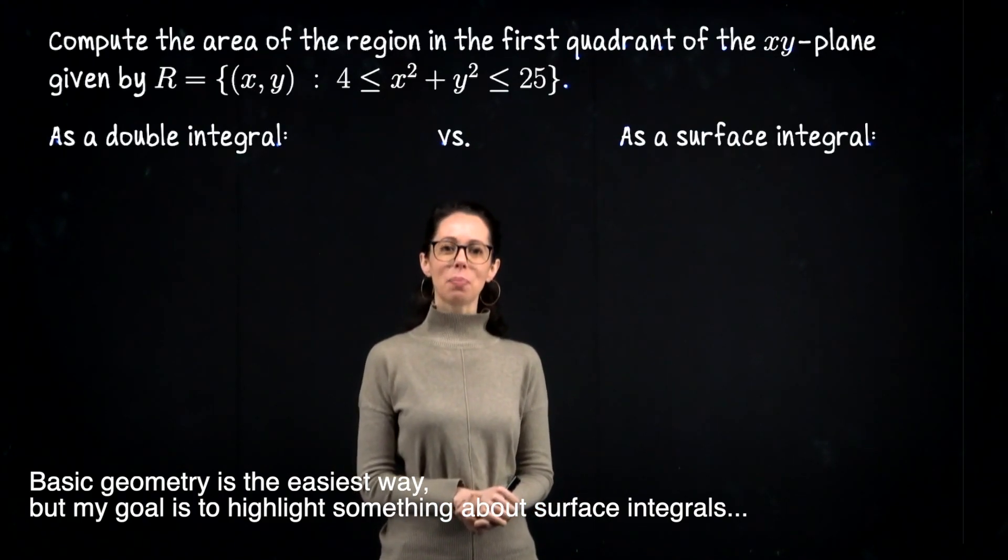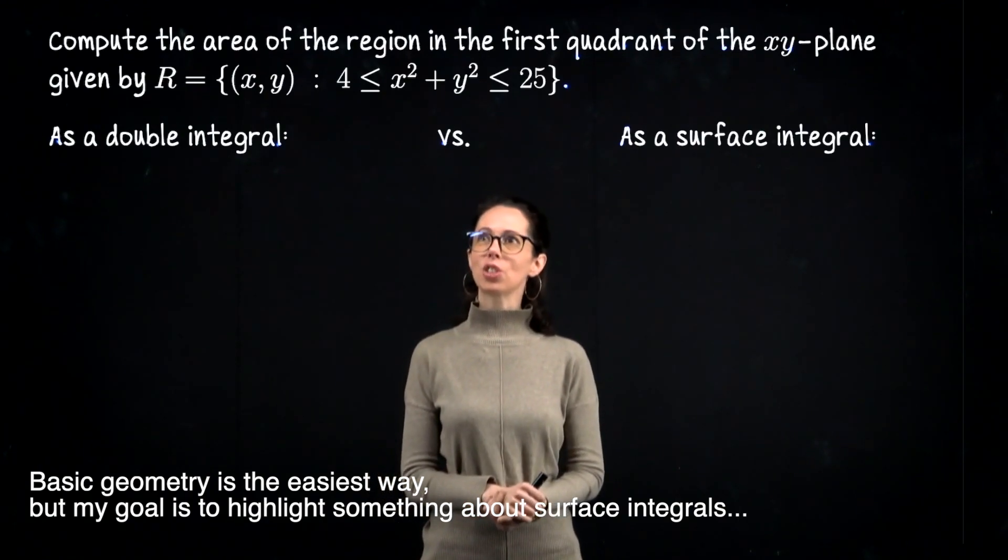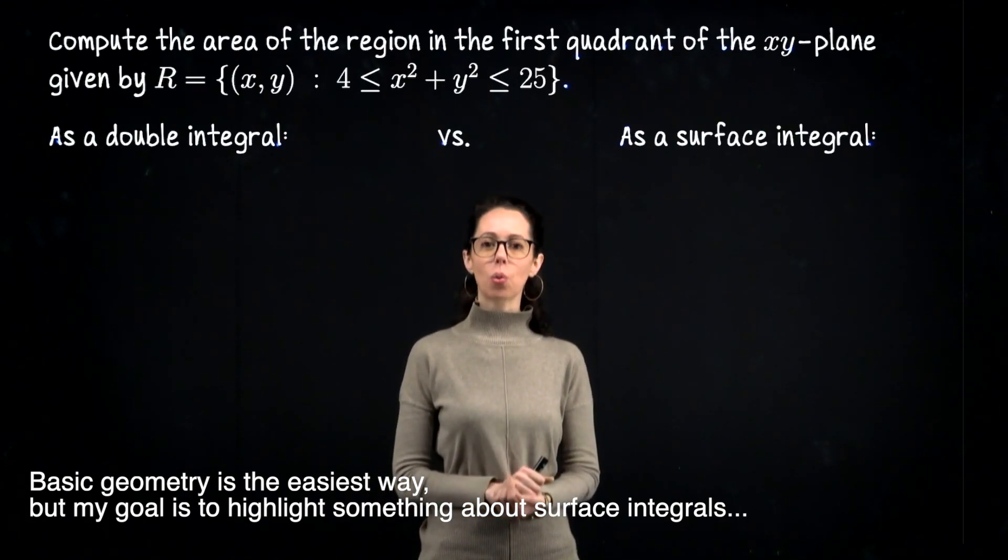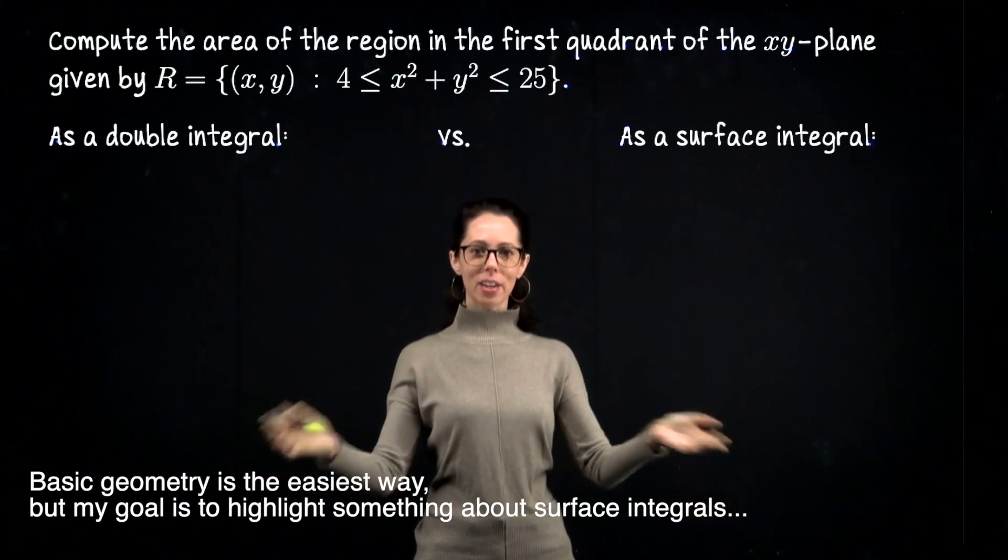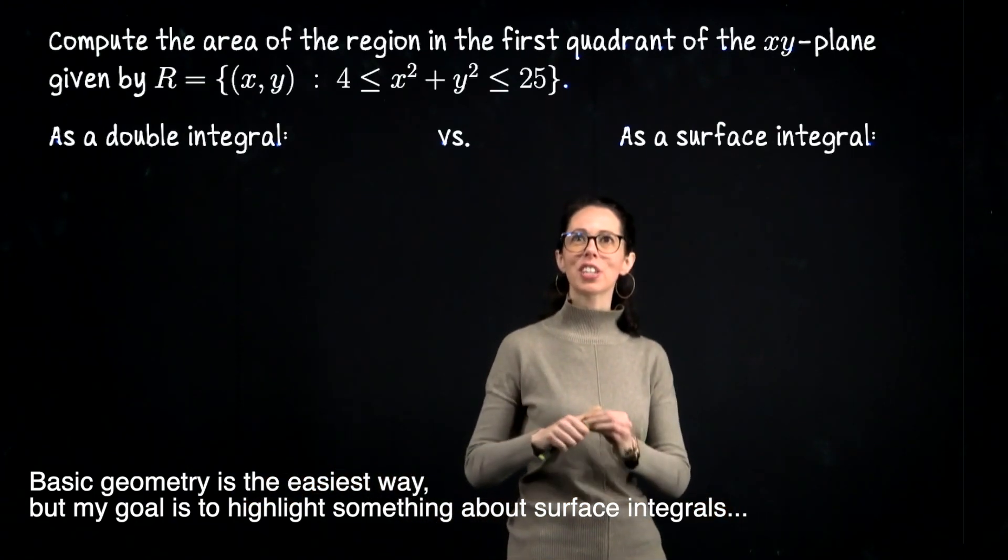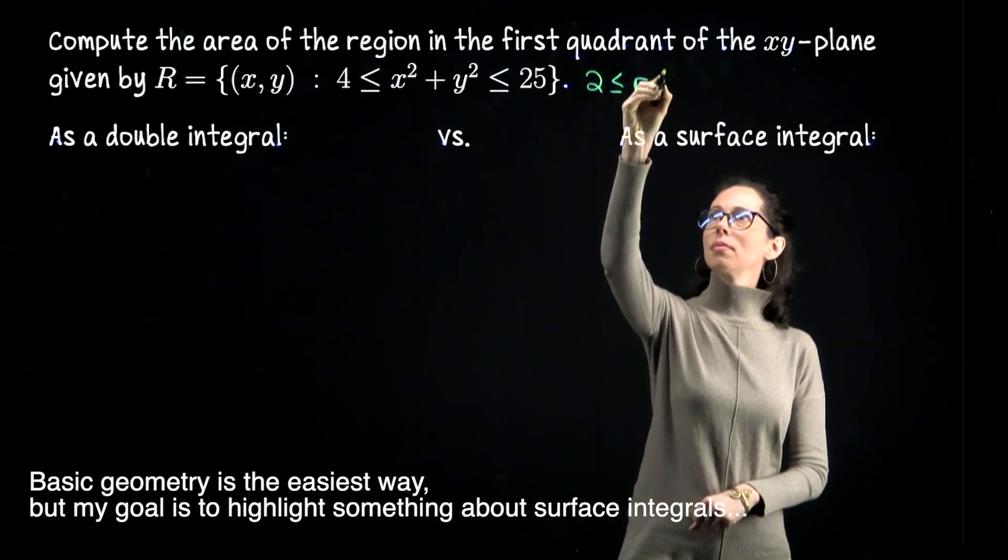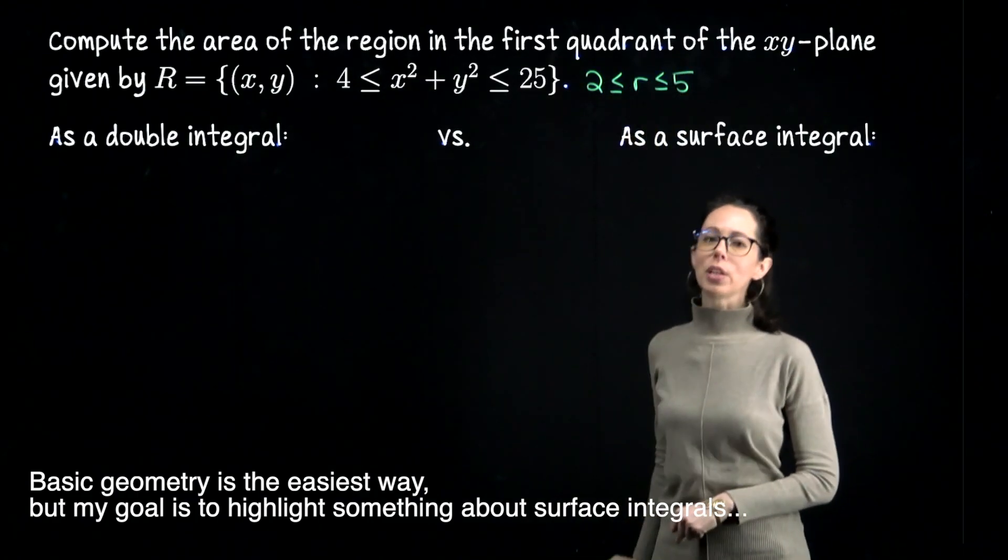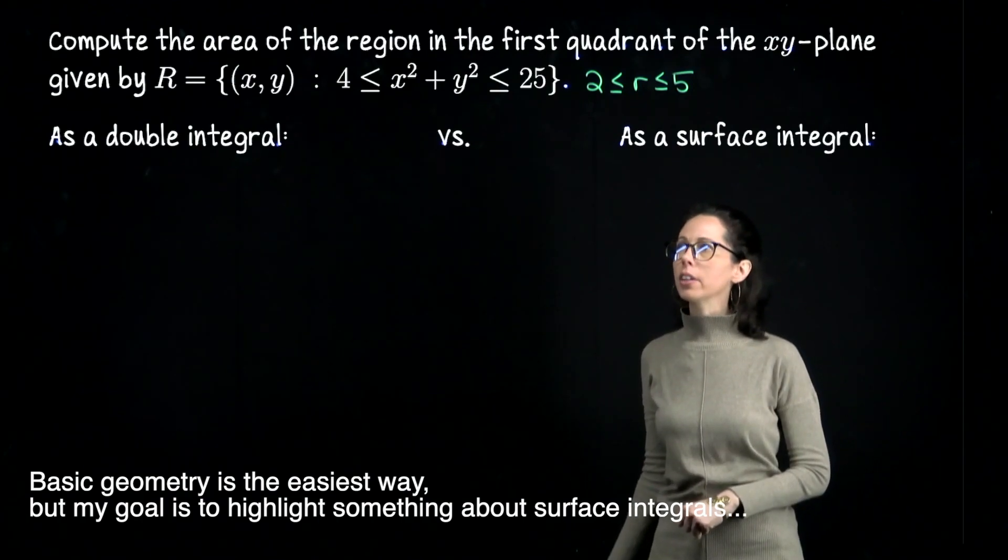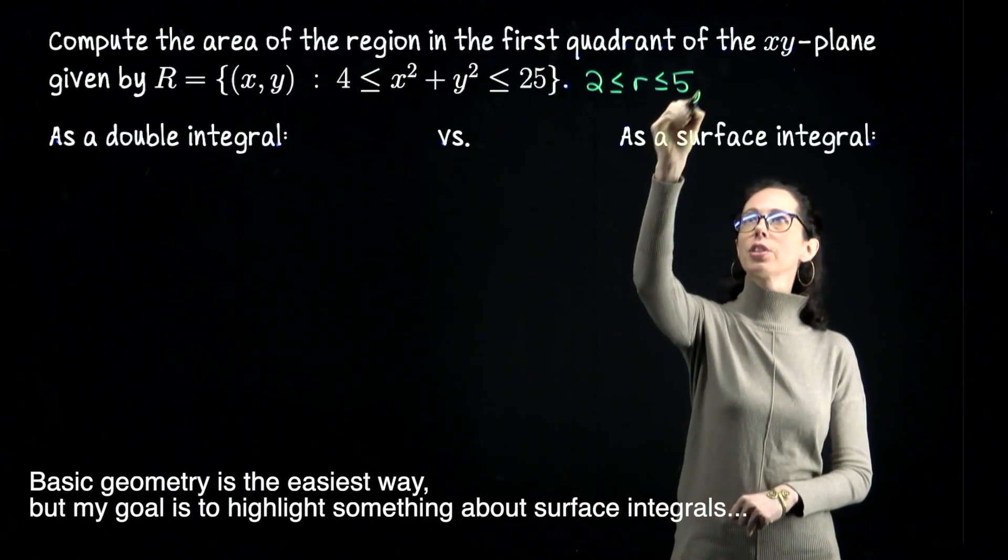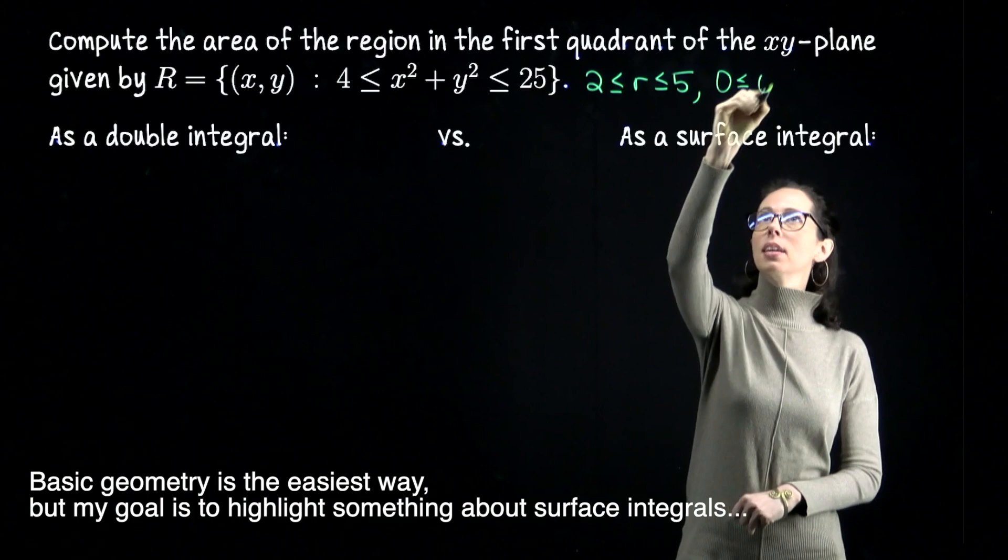So what we have here is the region between the circles of radius 2 and 5 in the first quadrant. Both of these integrals are going to use the same polar description for this region. So let me note here that our radius will be between 2 and 5, and our angular component will be between 0 and π/2 to keep us in the first quadrant.